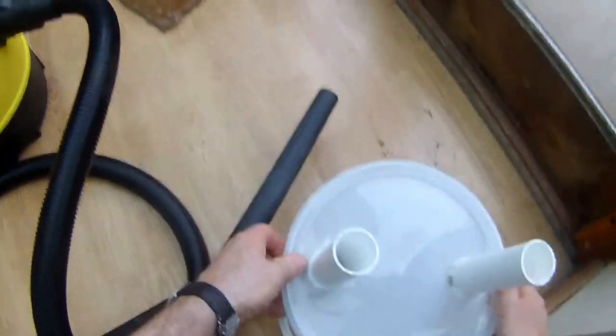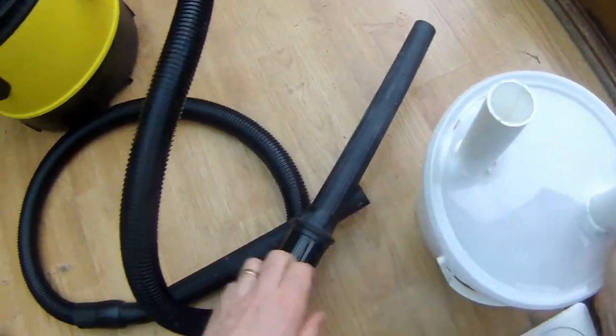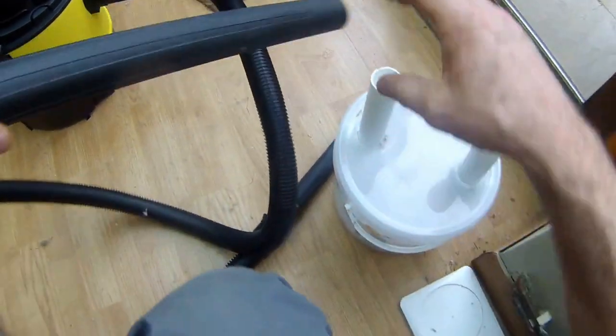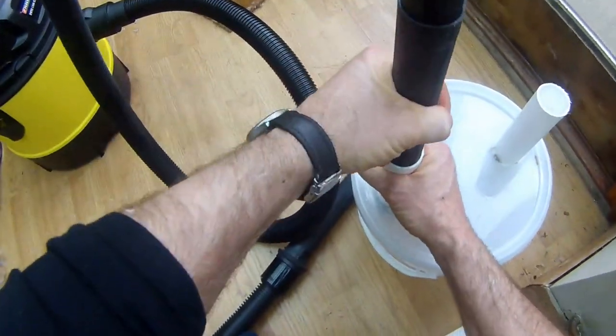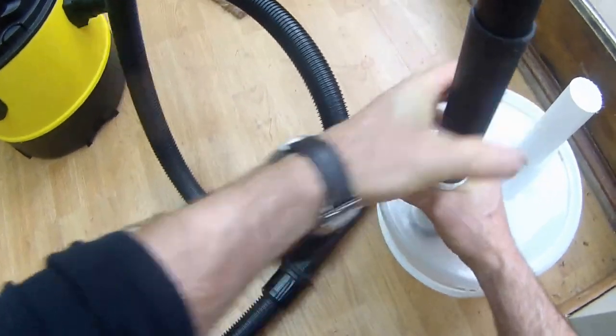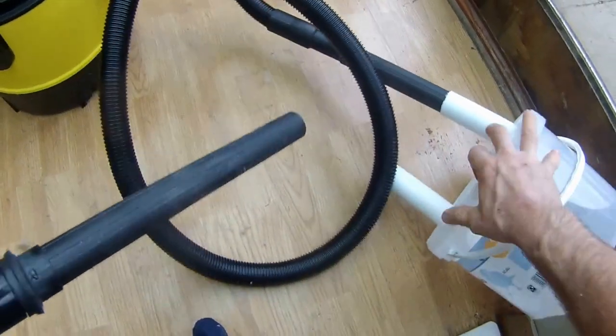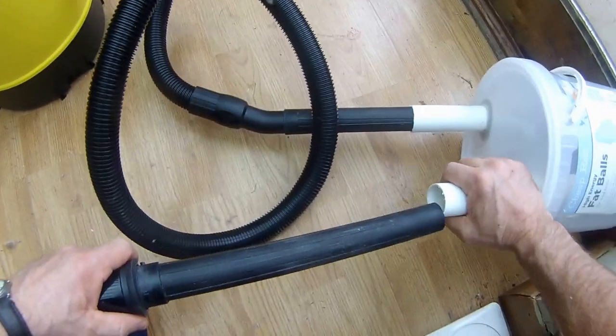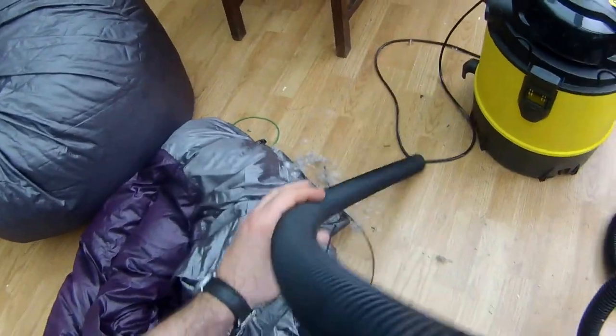So put that one on there, seal it down. The shop vac goes onto the one with the filter, and then my suck up tube goes into the other hole. And I'm ready to suck up.